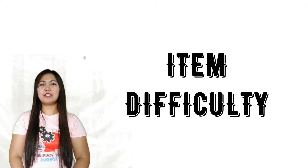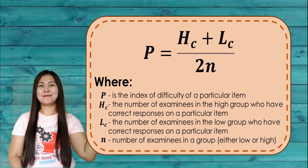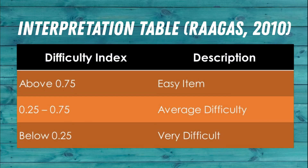Item difficulty indicates the proportion of students who got the item right. A high percentage indicates an easy item and a low percentage indicates a difficult item. In solving the difficulty index of each item, you will be using this formula.